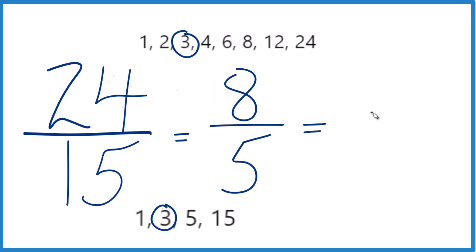5 goes into 8 one time. 1 times 5 is 5 with 3 left over. Bring this 5 across. As a mixed number, 24 fifteenths, or 8 fifths, equals 1 and 3 fifths.